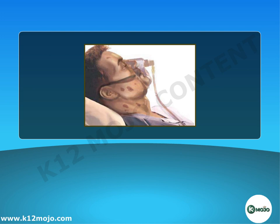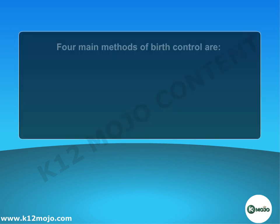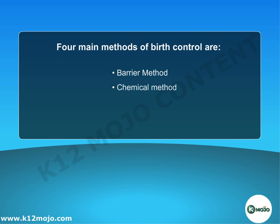No definite cure has been found for this disease. The four main methods of birth control are the barrier method, chemical method, use of IUCD, and surgical method.